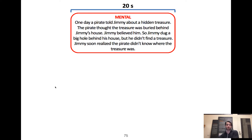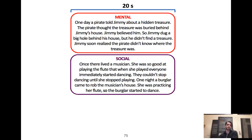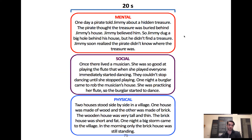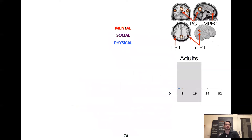Here's a social story — telling a narrative about what happened, not as much emphasis on thinking: 'Once there lived a musician. She was so good at playing the flute that when she played, everyone immediately started dancing. They couldn't stop dancing until she stopped playing. One night, a burglar came to rob the musician's house. She was practicing her flute, so the burglar started to dance.' And then a physical story: 'Two houses stood side by side in a village. One was made of wood and the other of brick. The wooden house was very tall and thin; the brick house was short and fat. One night, a big storm came, and in the morning, only the brick house was still standing.' So we have three story types: mental, social, and physical.